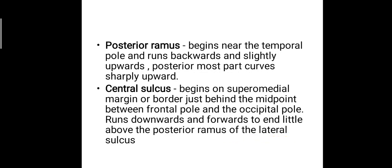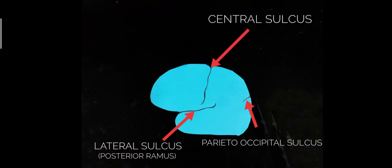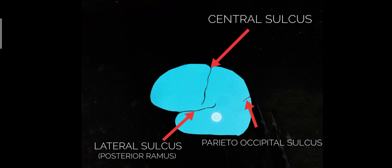It's very easy to remember. The posterior ramus starts just behind the temporal pole, then runs backwards and slightly upwards until it reaches the posterior most part where it tracks sharply upwards. This is the posterior ramus of the lateral sulcus.